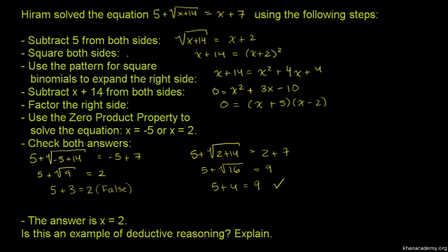Subtract x + 14 from both sides to get x² + 3x - 10 = 0.